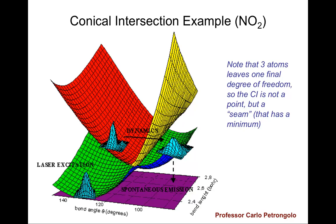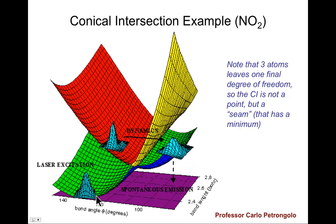Let's take a look at a picture of that. For the molecule NO2, two potential energy surfaces are shown. One surface is plotted as a function of two degrees of freedom: the NO bond length, treated symmetrically, and the bond angle — the ONO angle. This is taken from work of Carlo Petrongolo.